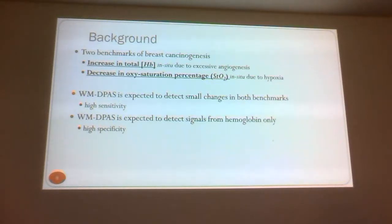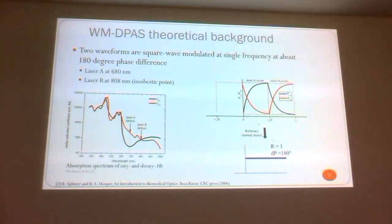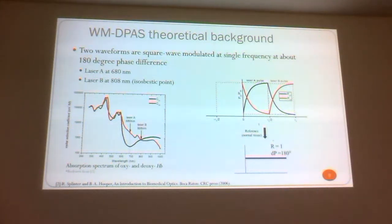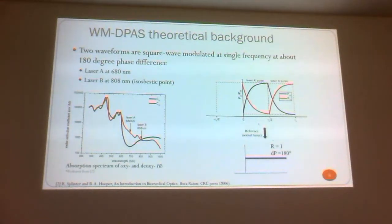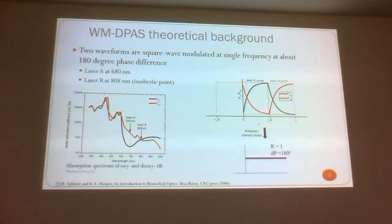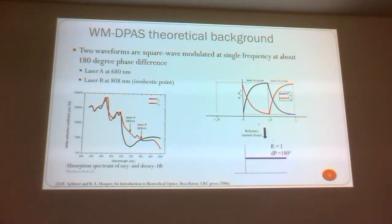This is the hemoglobin absorption spectrum. Because we have very high control of the frequencies — going back to the unique situation with frequency domain as opposed to pulsed laser — I can hone into two wavelengths. This wavelength is called the isobestic point, where oxy-hemoglobin and deoxy-hemoglobin have the same absorption coefficient — that's good because it's a reference wavelength. Then I go to 680 nm, where there's a very high change in the absorption spectrum between deoxygenated and oxygenated. Deoxy is up here with the high absorption coefficient, and oxy is the low absorption coefficient.